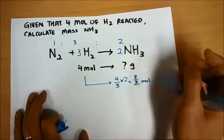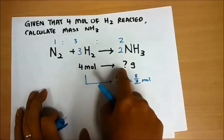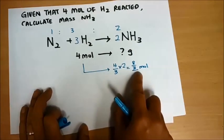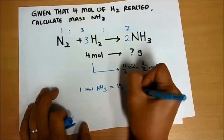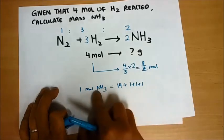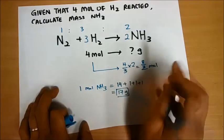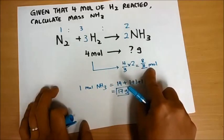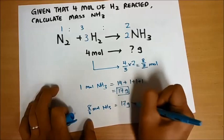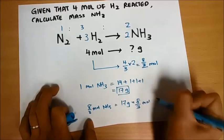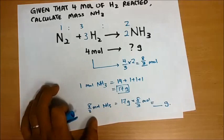This gives me 8/3 moles of NH3. Now this is not the end, because I want to find the mass of NH3. So what's the next step? I know that 1 mole of NH3 is equal to the molecular mass, which is 14 + 1 + 1 + 1. That means you add up everything. So 1 mole equals 17 grams. The molecular mass is 17 grams. 8/3 moles would be 17 grams times 8/3 moles — calculate this out and you get the figure.